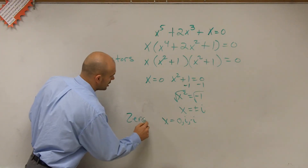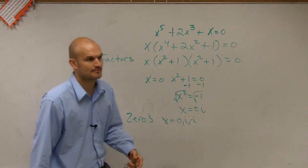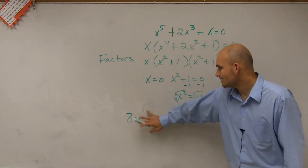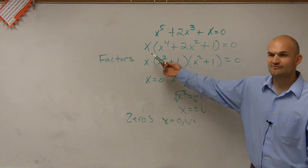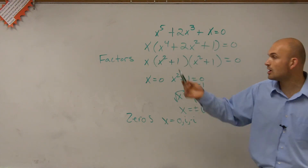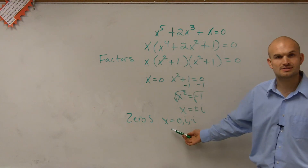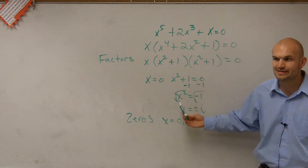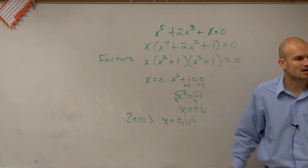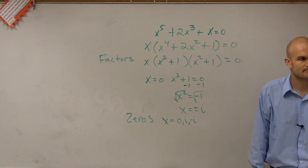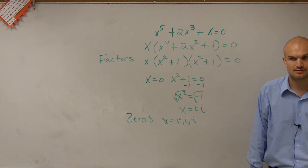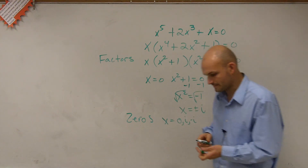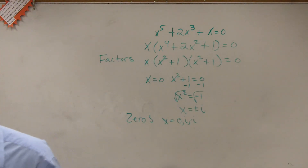These are what we call our zeros. So we go from zeros to factors — how do our factors relate to our zeros? Once we factor a polynomial, we set each factor equal to zero, and that's what we use as our zeros. So it goes from factors to zeros of your equation. That's the second step.